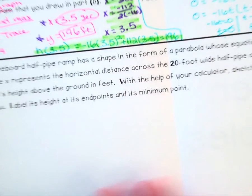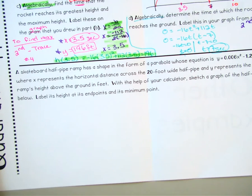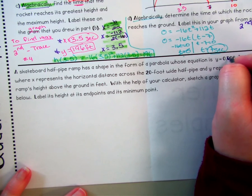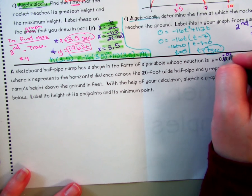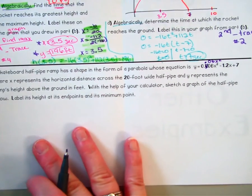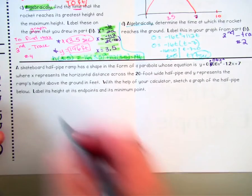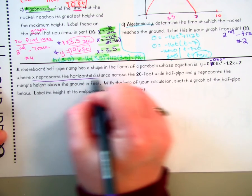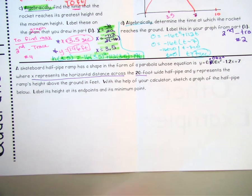Let's take a look at our second one. This one's a little different. So a skateboard halfpipe ramp has the shape in the form of a parabola whose equation is. There's one too many zeros in there. That should be 0.06x squared minus 1.2x plus 7. All right. So there's one too many zeros in there. If you could just fix that, please.